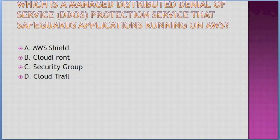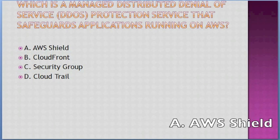Which is the managed distributed denial of service (DDoS) protection service that safeguards applications running on AWS? Options: A. AWS Shield, B. CloudFront, C. Security Group, D. CloudTrail. Answer: A — AWS Shield.